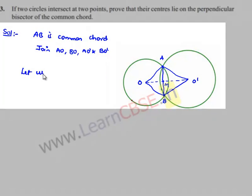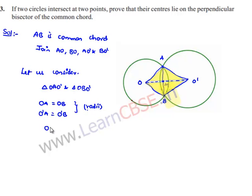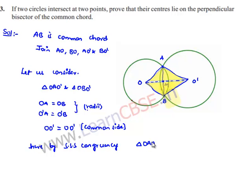Let us consider triangle OAO' and triangle OBO'. In these two triangles, OA is equal to OB since they are the radii of the circle with center O, and O'A is equal to O'B since they are the radii of the circle with center O', and OO' is equal to OO', which is the common side for both triangles.